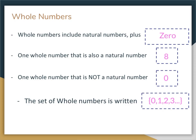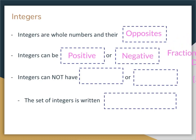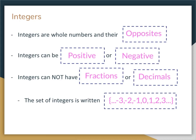Integers are whole numbers and their opposites. So positive five and negative five are both covered. Integers can be positive or negative. However, integers cannot have fractions or decimals. The set of integers is written with braces and dots on the front end as well: {..., -3, -2, -1, 0, 1, 2, 3, ...} to show it goes to infinity in both directions. The braces are very important — if you do not write them, you will not receive credit. Integers include all the negative and positive numbers, but still no fractions and no decimals — only positive and negative numbers and zero.